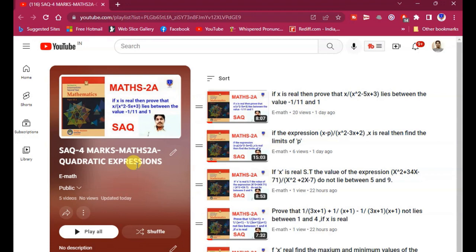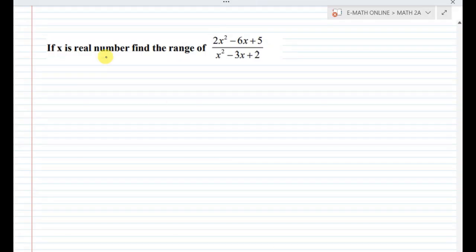Coming to the question. The question is, if x is a real number, then find the range of 2x square minus 6x plus 5 divided by x square minus 3x plus 2.